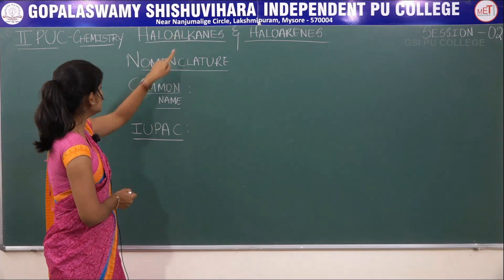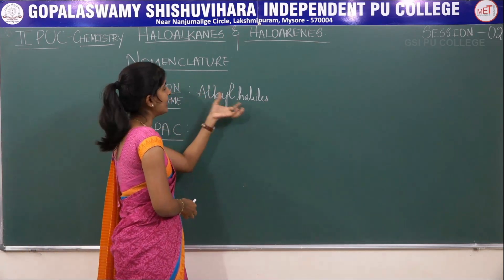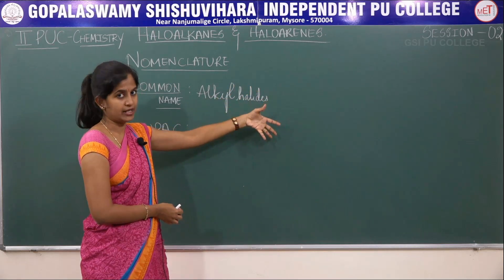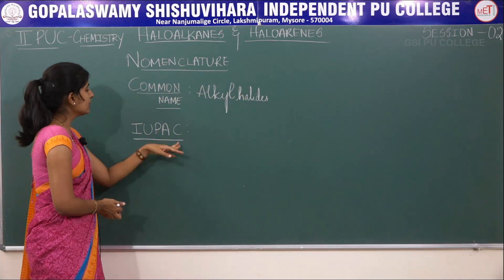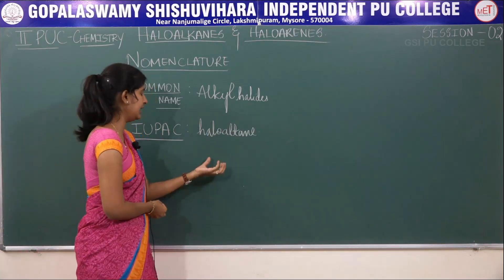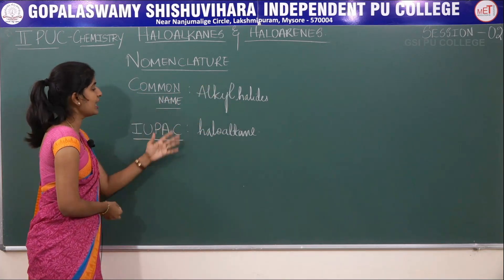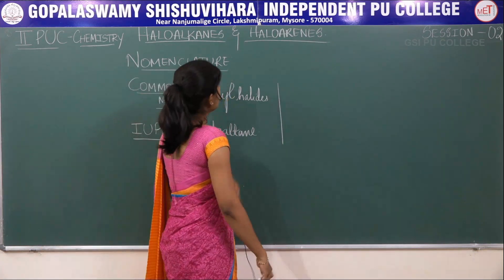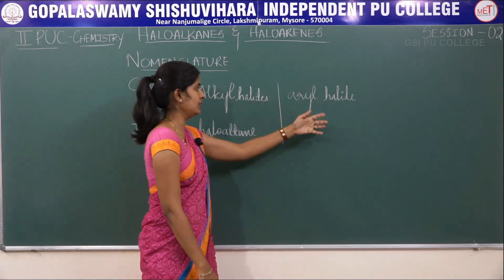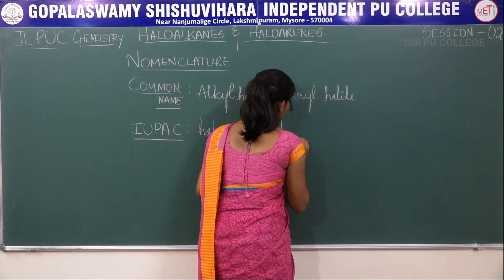For haloalkanes, the common name is alkyl halide — naming the alkyl group first followed by the halide: chloride, bromide, fluoride, or iodide. The IUPAC name is haloalkane — halogen name first followed by the parent alkane name. For haloarenes, the common name is aryl halide (e.g., aryl bromide, aryl chloride), while the IUPAC name is haloarène.